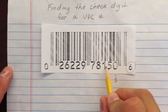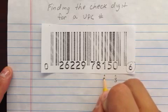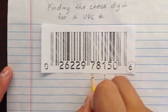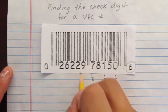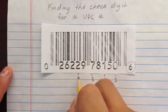Count the even positions: 1, 2, 3, 4 — that's an even position. Multiply by 3 for all of these, and skip the ones in between.